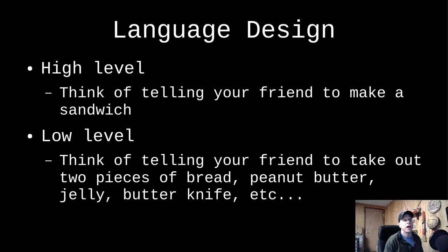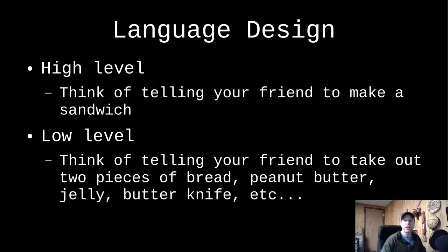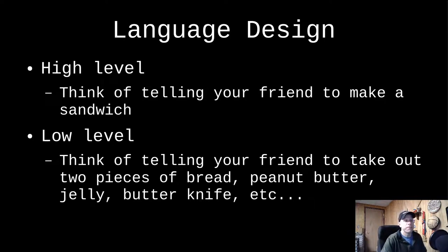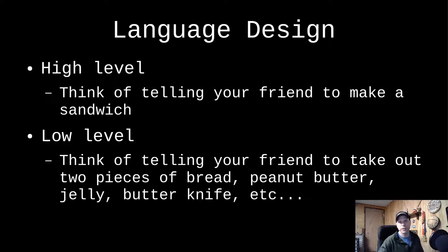Think of it like telling your friend to make a sandwich. From a high level, it's just 'go make a sandwich.' From a low level, you have to be more explicit: go get some bread, go get some peanut butter, go get some jelly, get a knife, spread the jelly on one side, spread the peanut butter on the other side, and put everything back together in the right order — otherwise you end up with peanut butter on the outside and a pretty messy sandwich. A high-level language lets you describe what you want and it figures it out, whereas a low-level language requires you to be very particular about what you want and how you want it.